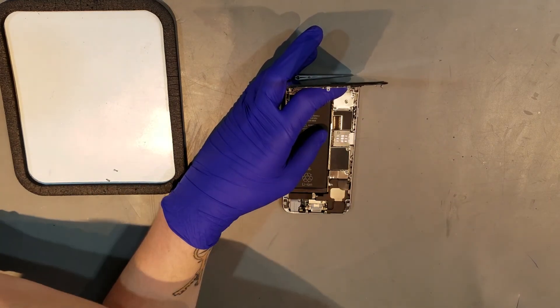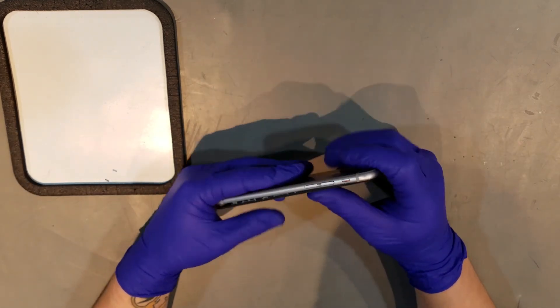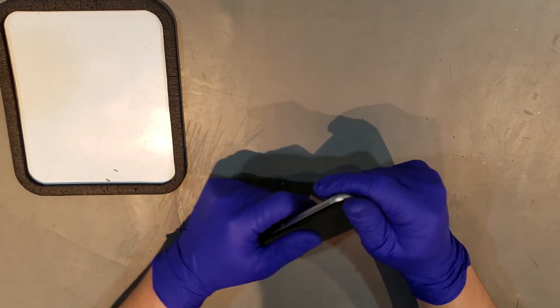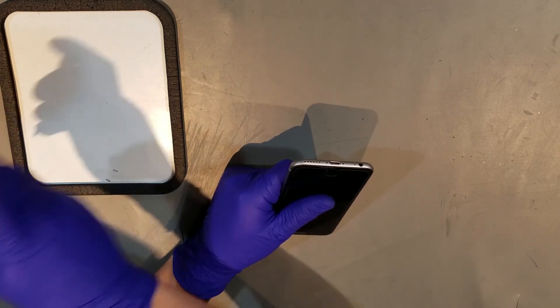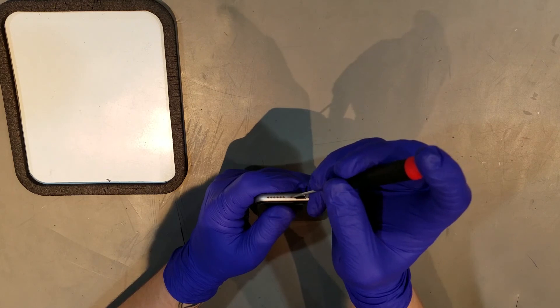When ready to close the phone back up, you should be able to notice little plastic hooks on the top of the display frame. These will have to be embedded into the back housing before the rest of the screen can be sat in. When the display is sitting flat on the phone, the two pentalobe screws can be replaced, completing the repair.